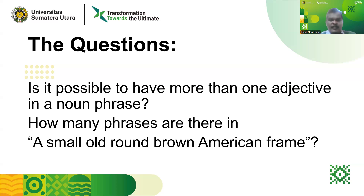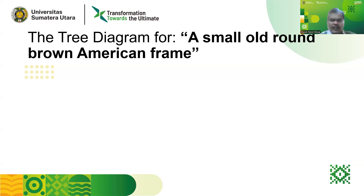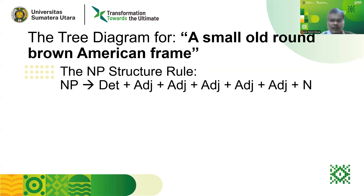Now, let's analyze this noun phrase using a tree diagram. Let's analyze the NP 'a small, all-round, brown American frame.' Before we analyze using a tree diagram, we should have the NP structure rule, because it will be much easier for us to draw a tree diagram if we know the NP structure rule for the phrase that we are going to analyze.